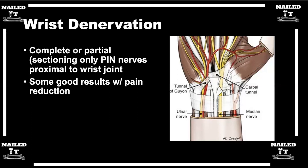So for stage one SLAC and SNAC wrists, we've covered radial styloidectomy and wrist denervation or neurectomies. Those are generally the main stage one operative treatment options before moving on to stage two.